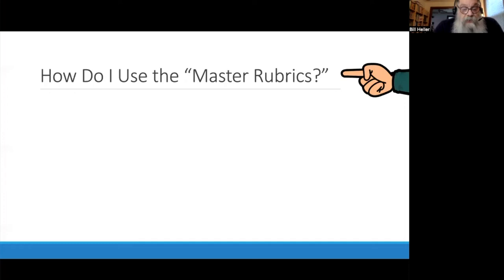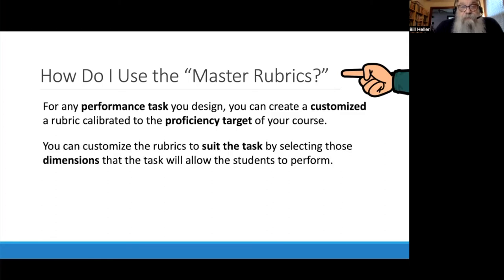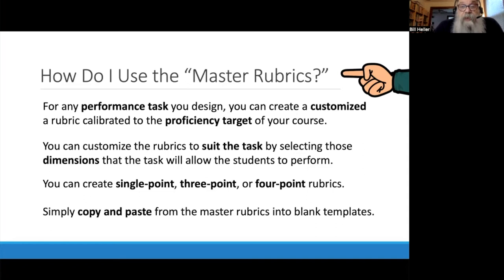Now we're going to move on to how to use the master rubrics to design your own customized rubrics. To make your own customized rubrics, you'll use the template documents in the folder. For any performance task you design, you can create a customized rubric calibrated to the proficiency target of your course. You can customize by selecting dimensions that the task will allow students to perform, create single-point, three-point, or four-point rubrics, and simply copy and paste from the master rubrics into blank templates.